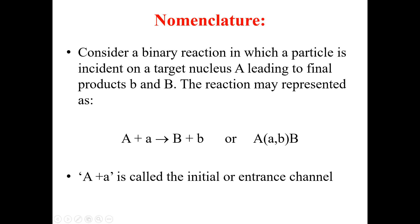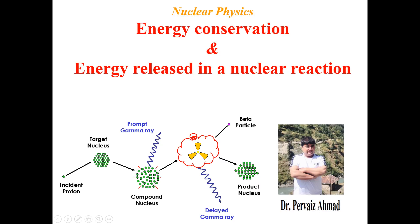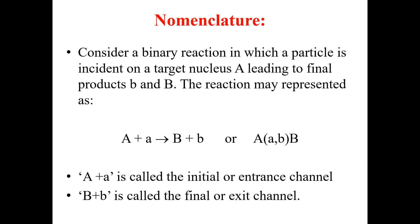On the left-hand side, A + a is called the initial or entrance channel, and B + b is called the final or exit channel. This is the nomenclature for a binary nuclear reaction. This is all for this lecture — see you in the next lecture very soon. Goodbye.